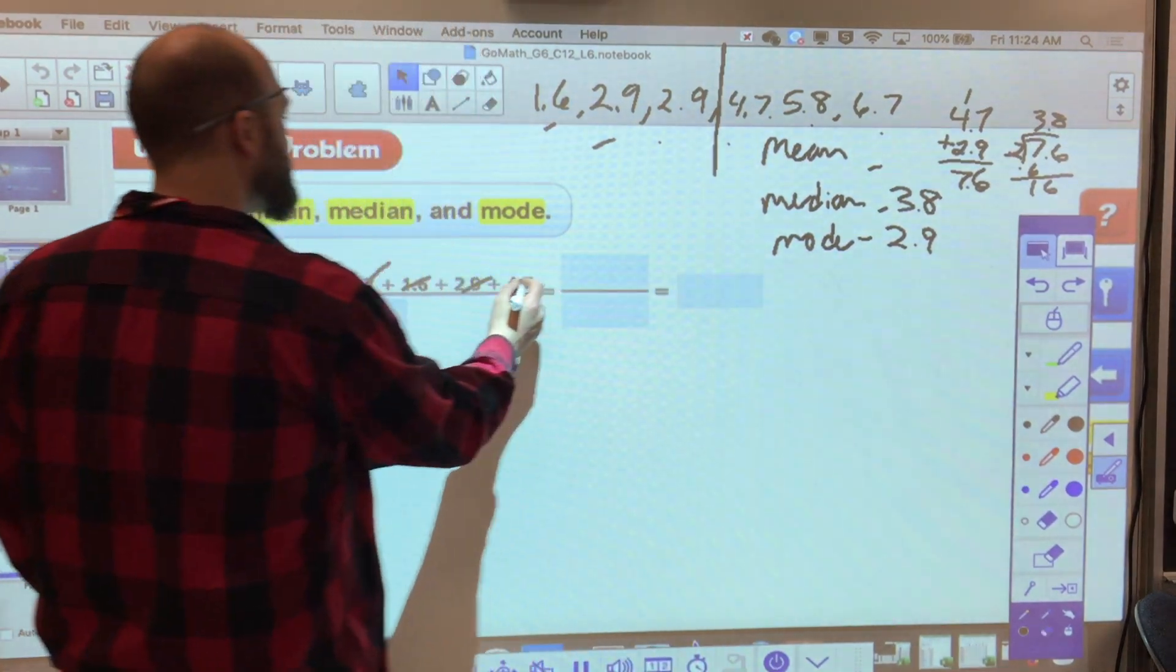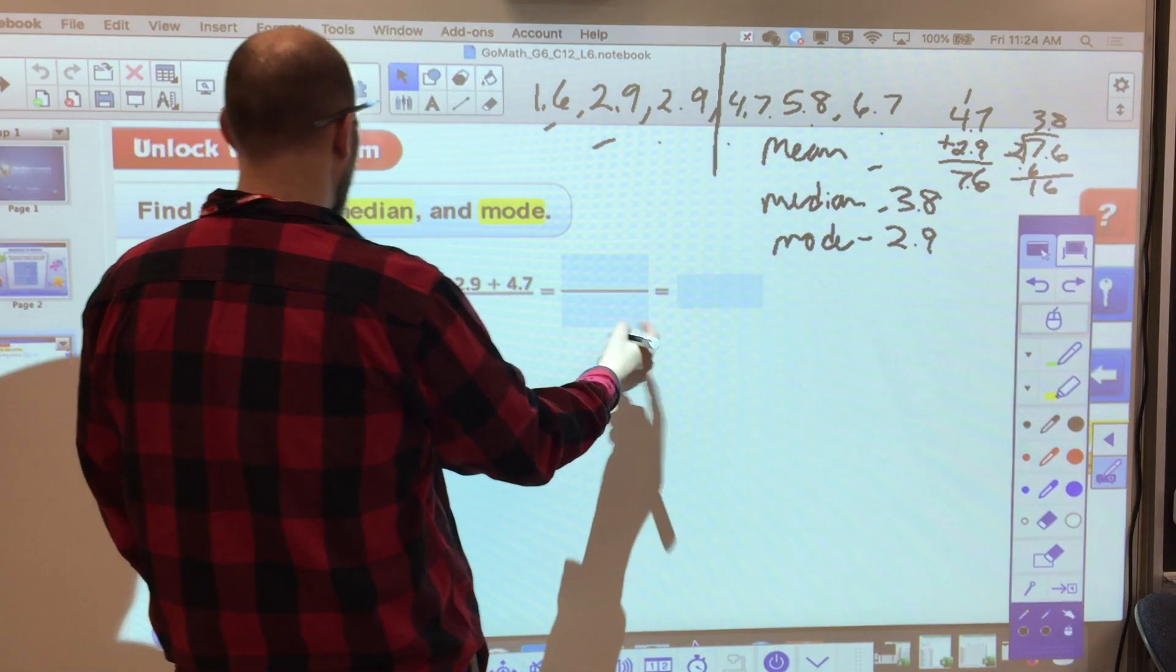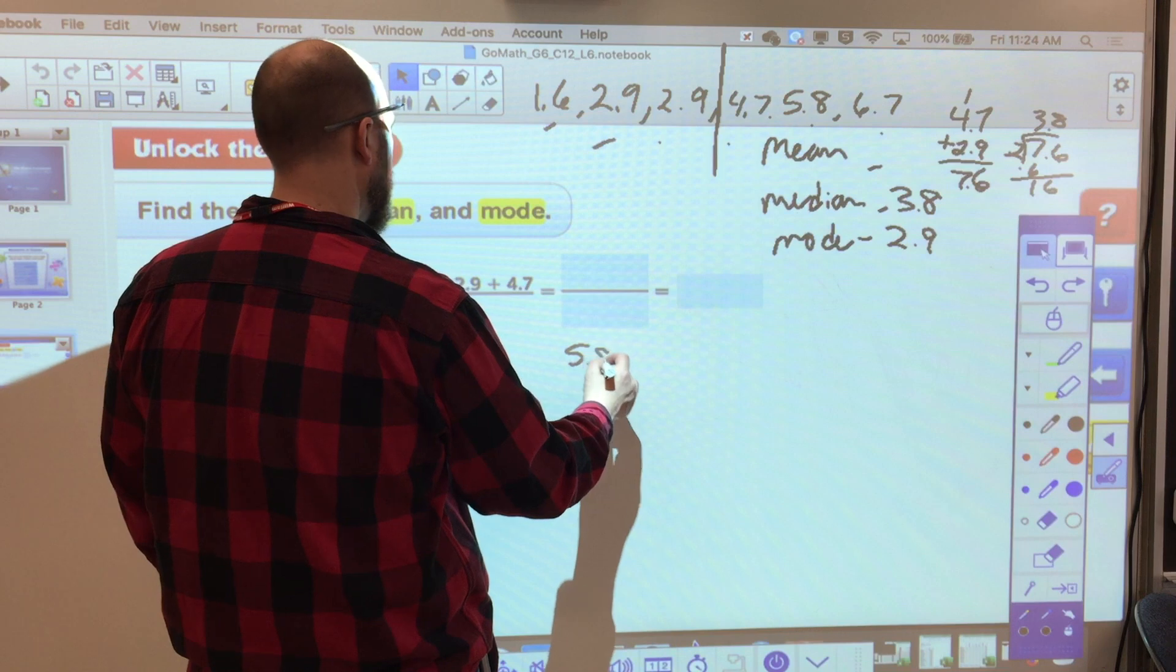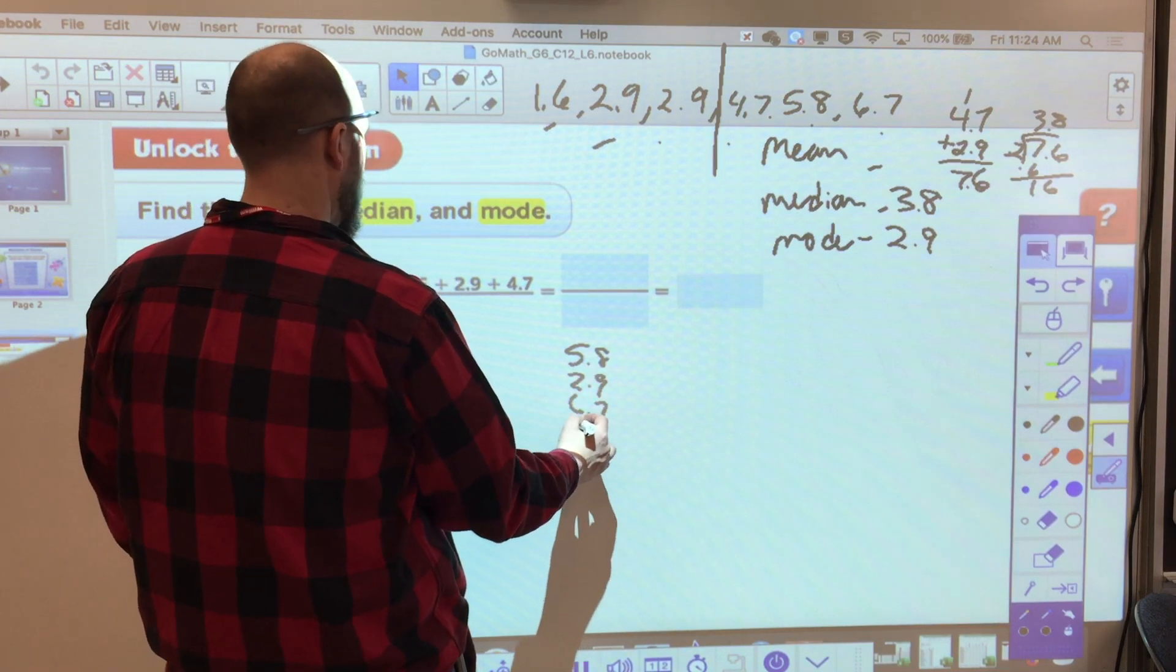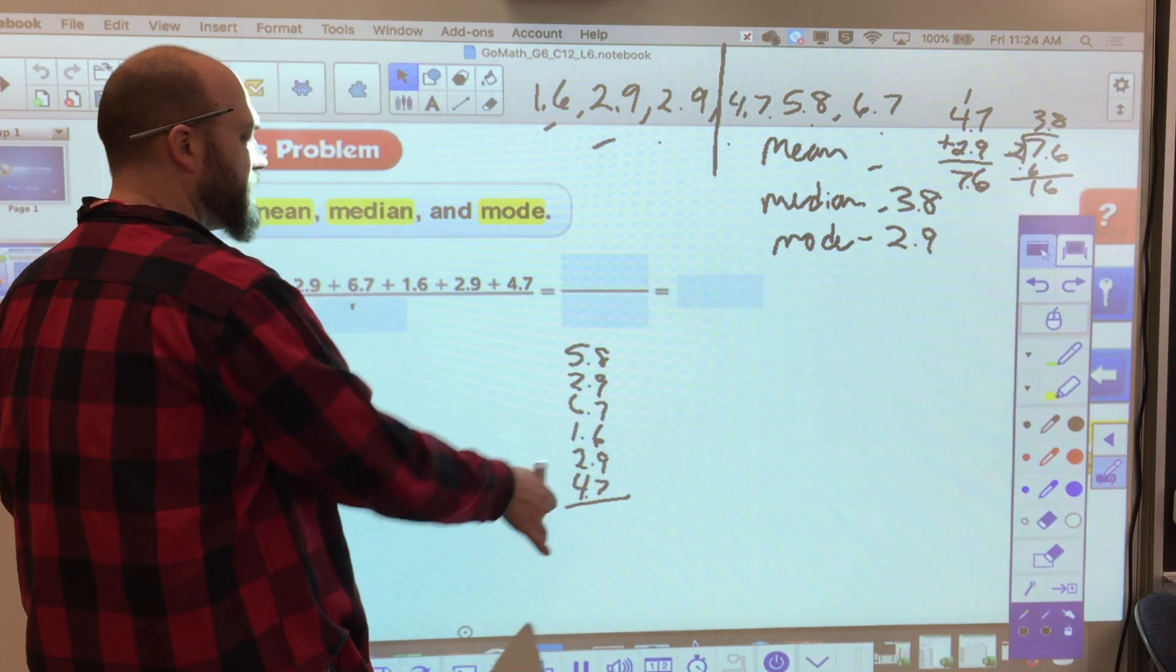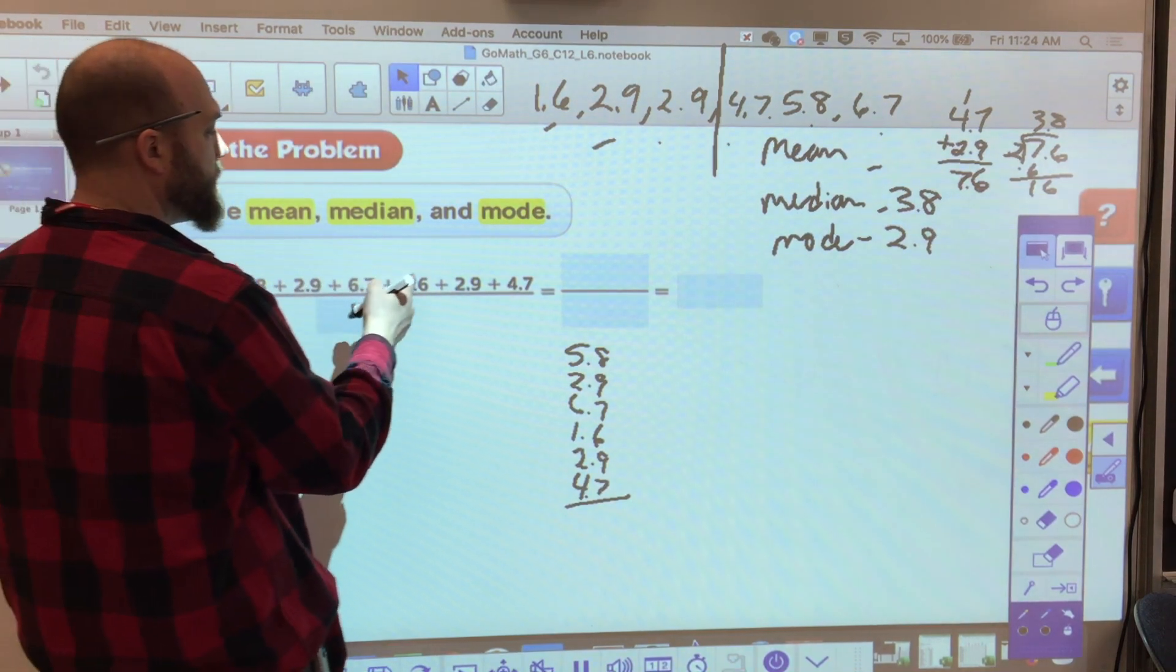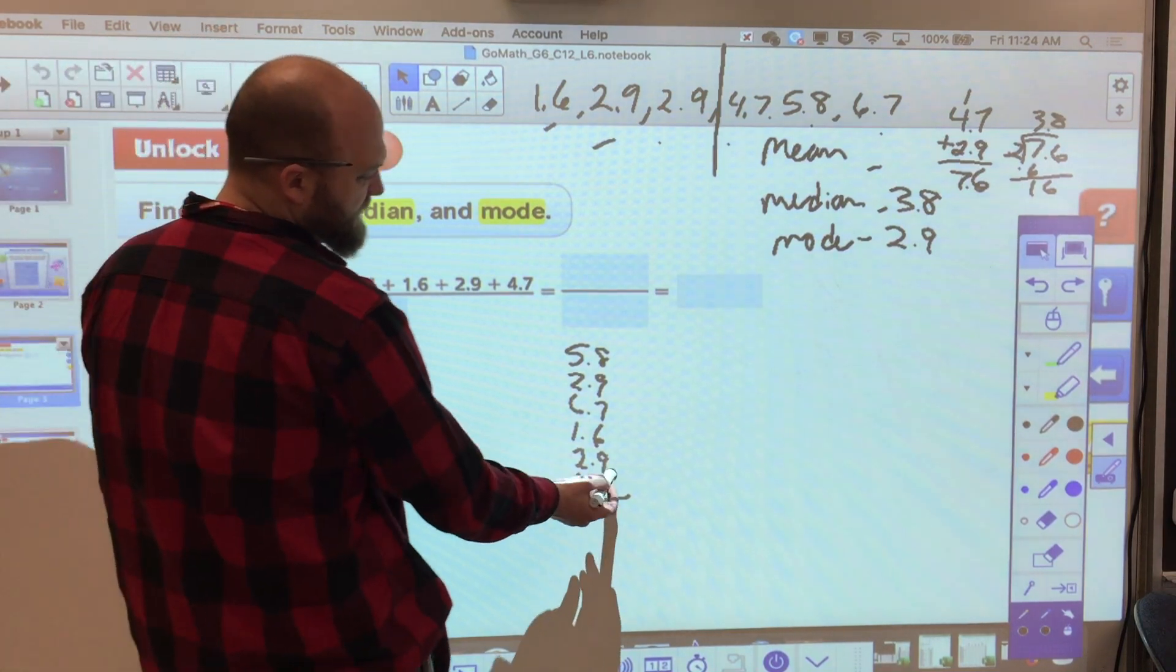Now I need my mean. So I have to add all these together. I'm going to make a bit of a chart here. I have 5.8, 2.9, 6.7, and 1.6, 2.9, and 4.7. I want to add them all together to see what I get. I'm going to divide by how many data points I have, which is 1, 2, 3, 4, 5, 6. That's what I'm going to divide by.